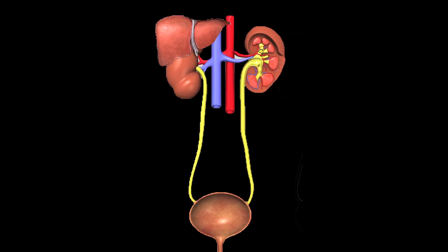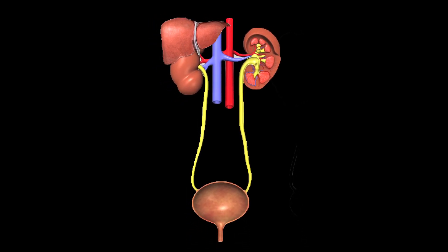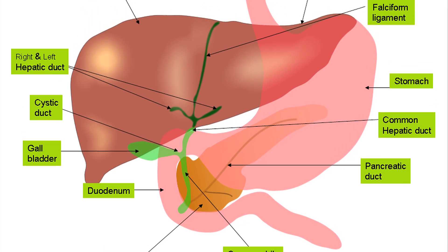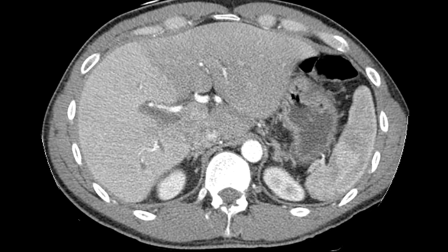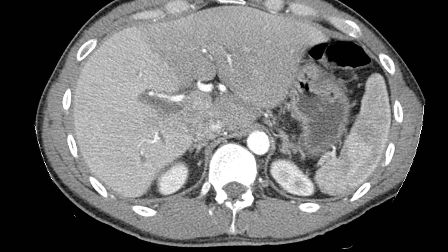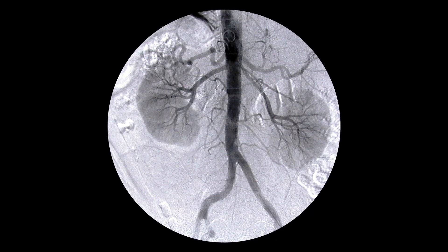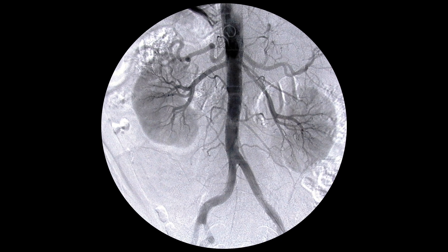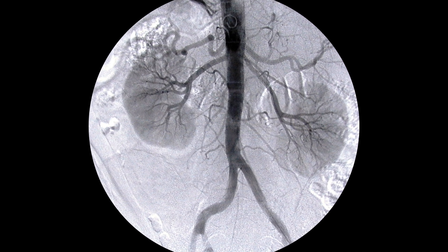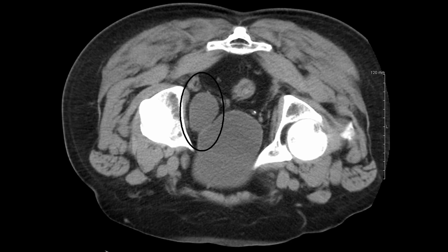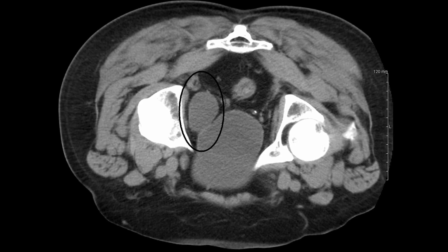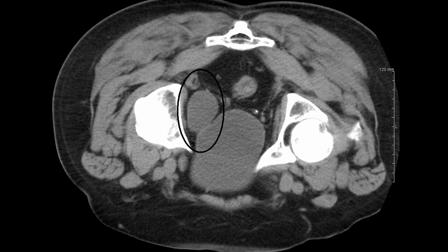The last organs on the list are the filter organs. These include the liver, kidneys, and bladder. The liver is responsible for detoxification, protein synthesis, and production of biochemicals necessary for digestion. The kidneys serve as a filter for our body — their main function is to preserve a balance of water in our body and to filter out waste. All waste is excreted as urine and is collected by the bladder.